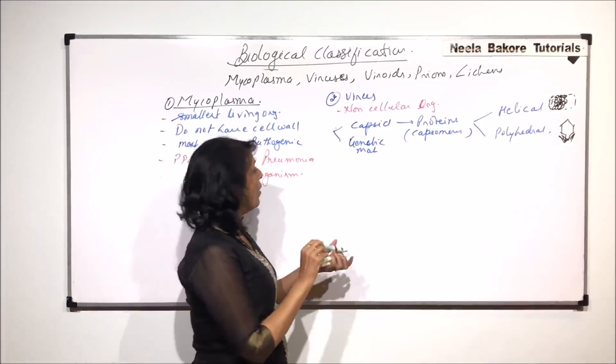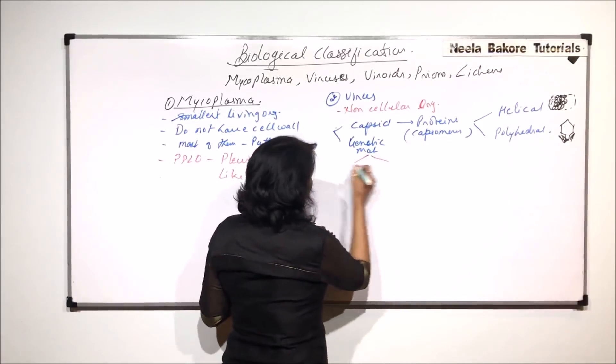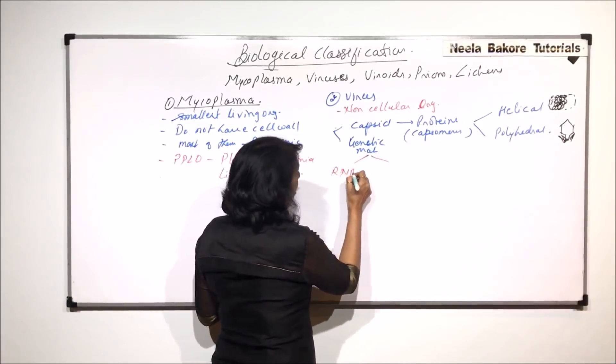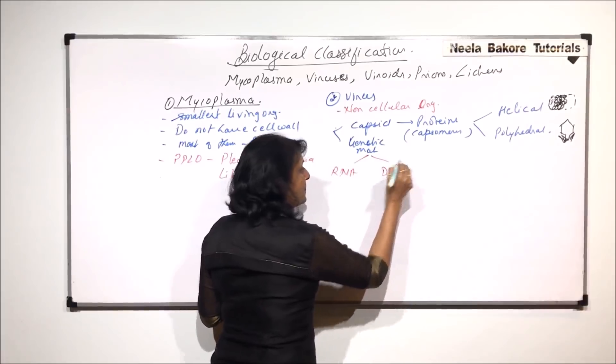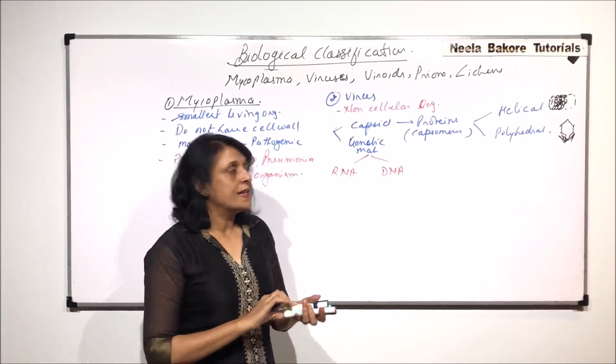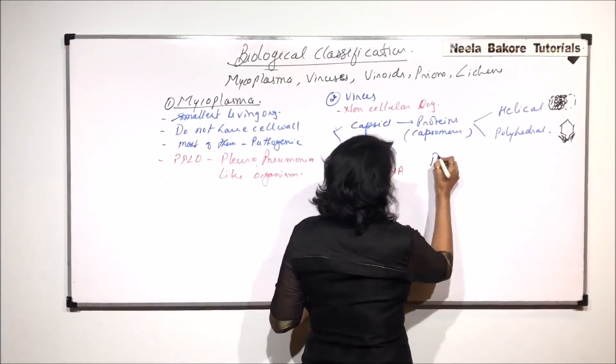Genetic material could be of two types: RNA or DNA. The RNA-containing viruses are known as retroviruses.